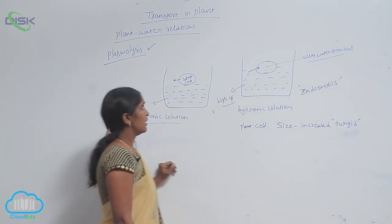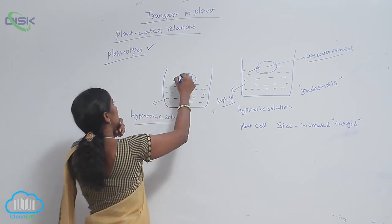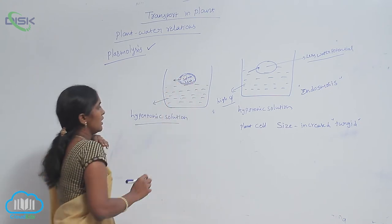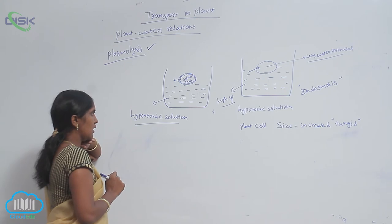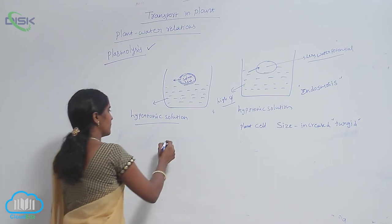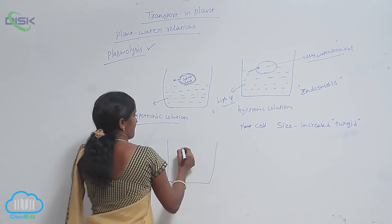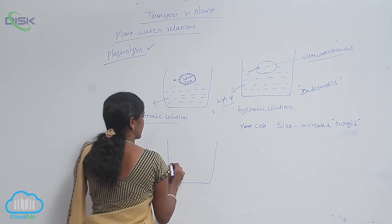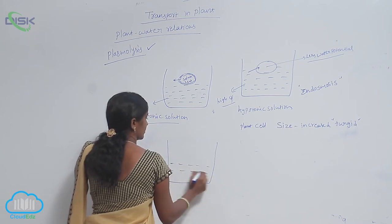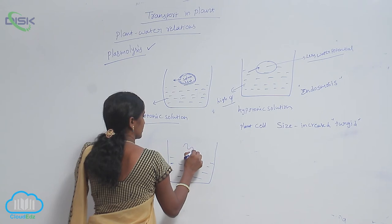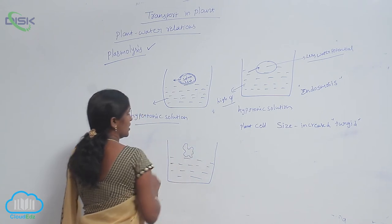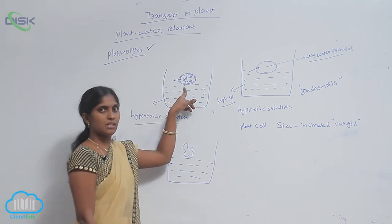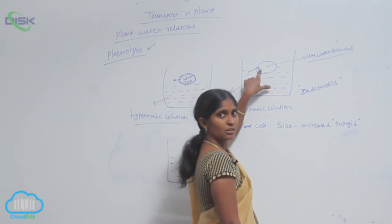In the hypertonic solution, the cell is shrinking inside — the cell is plasmolyzed. But in hypotonic solution, the cell becomes turgid.